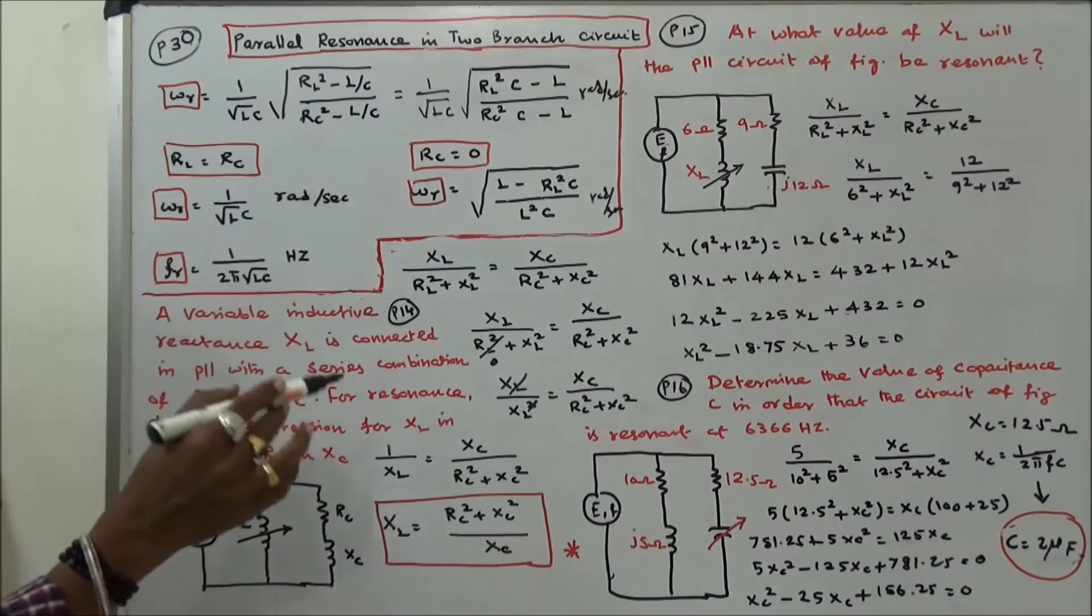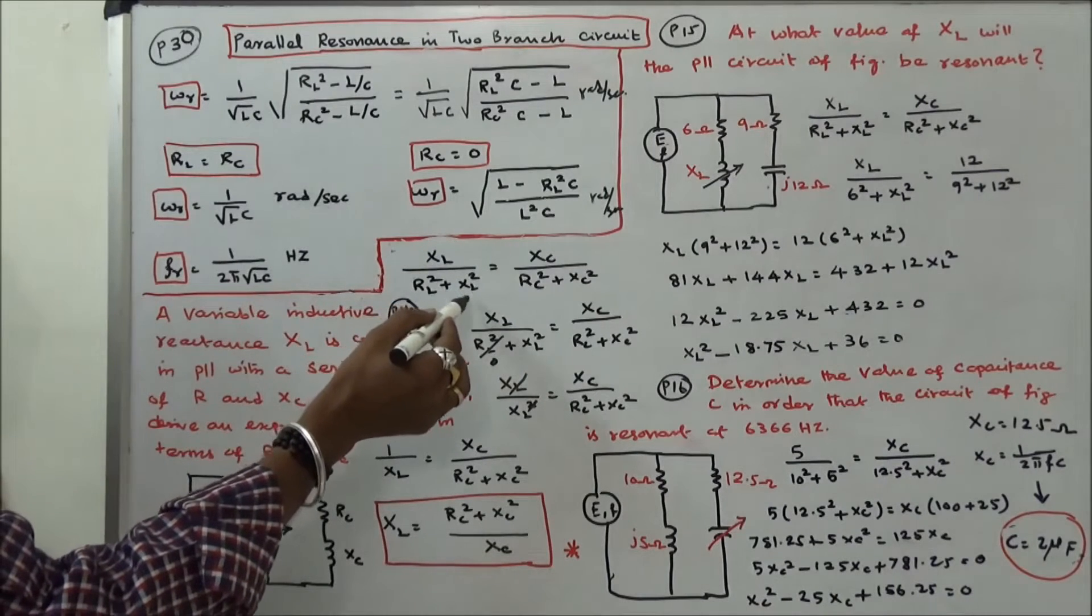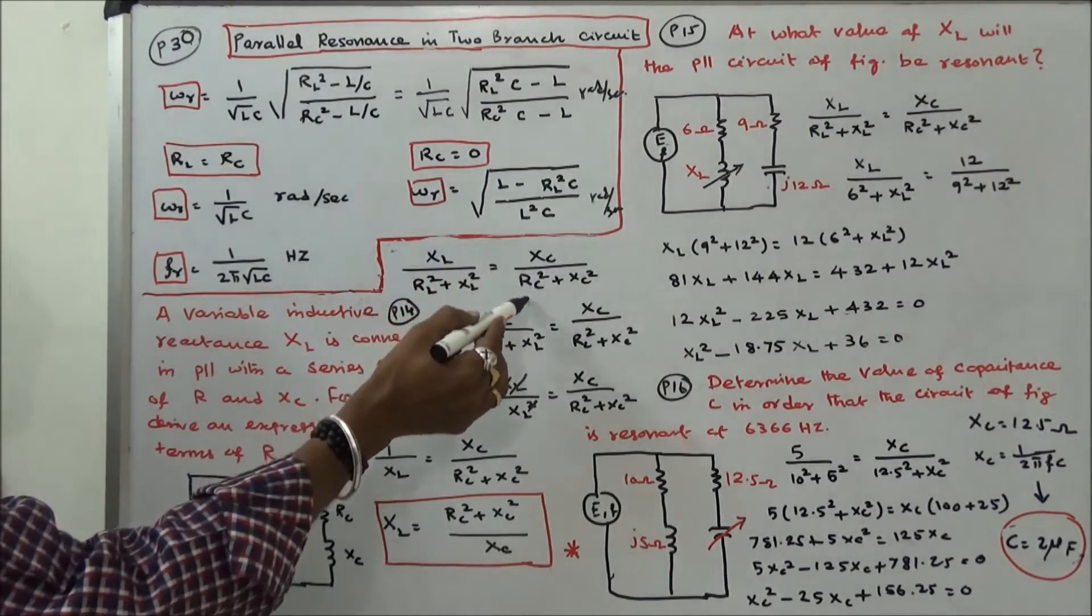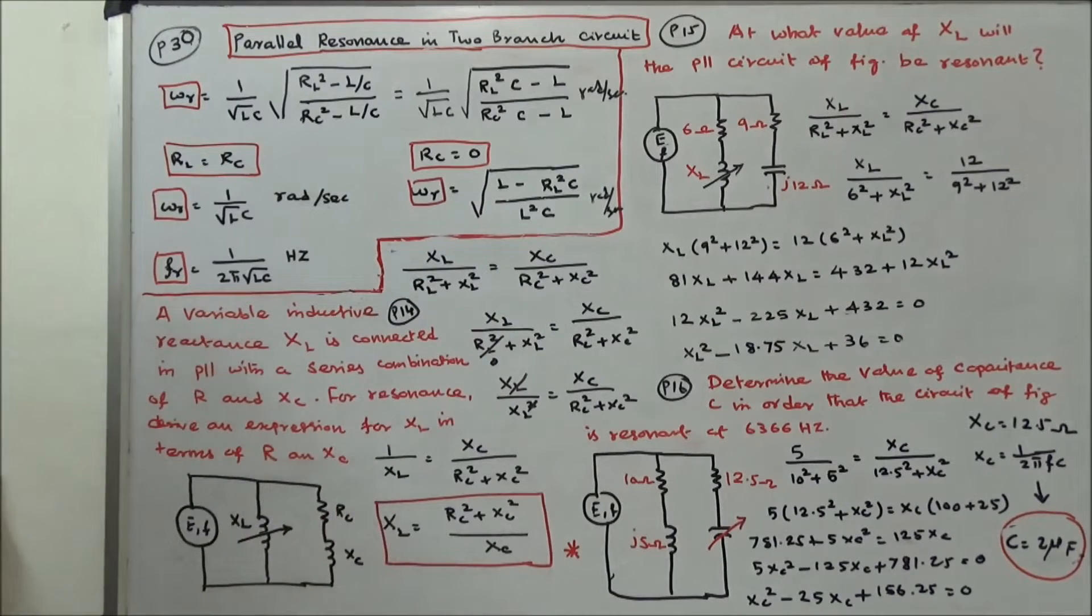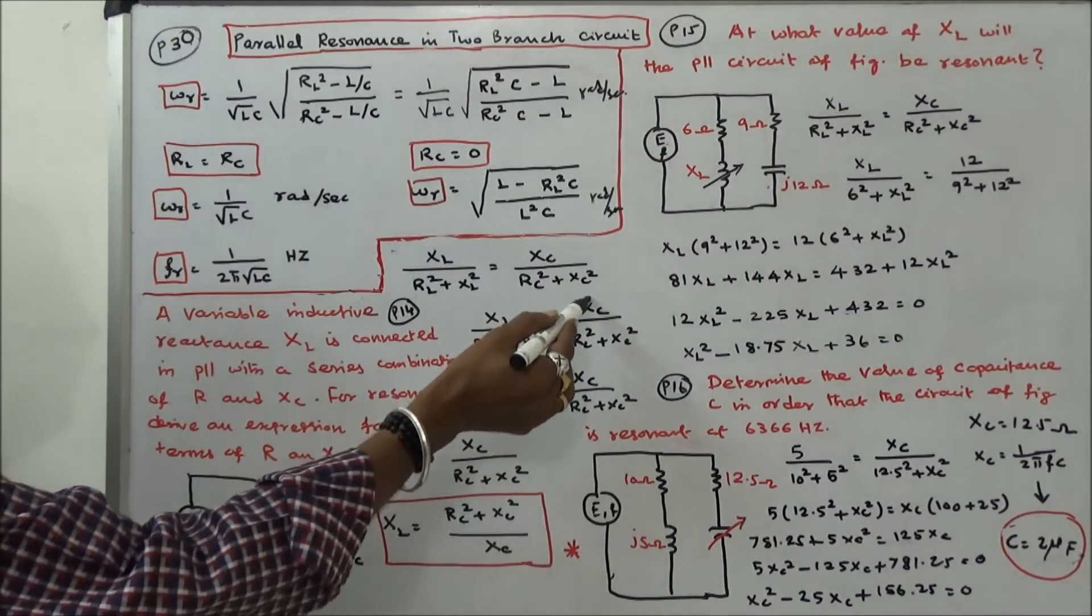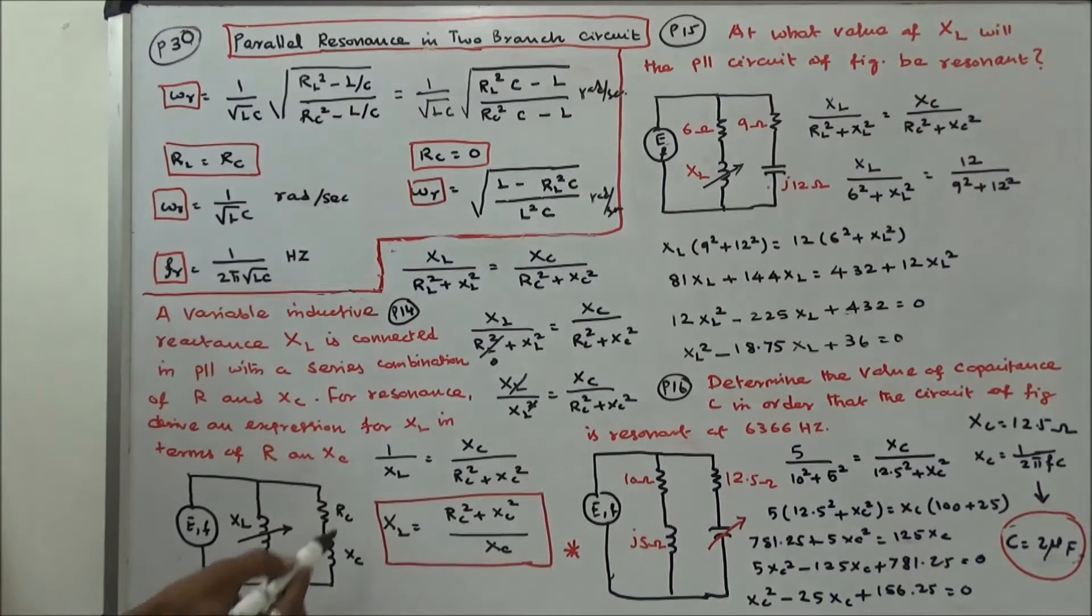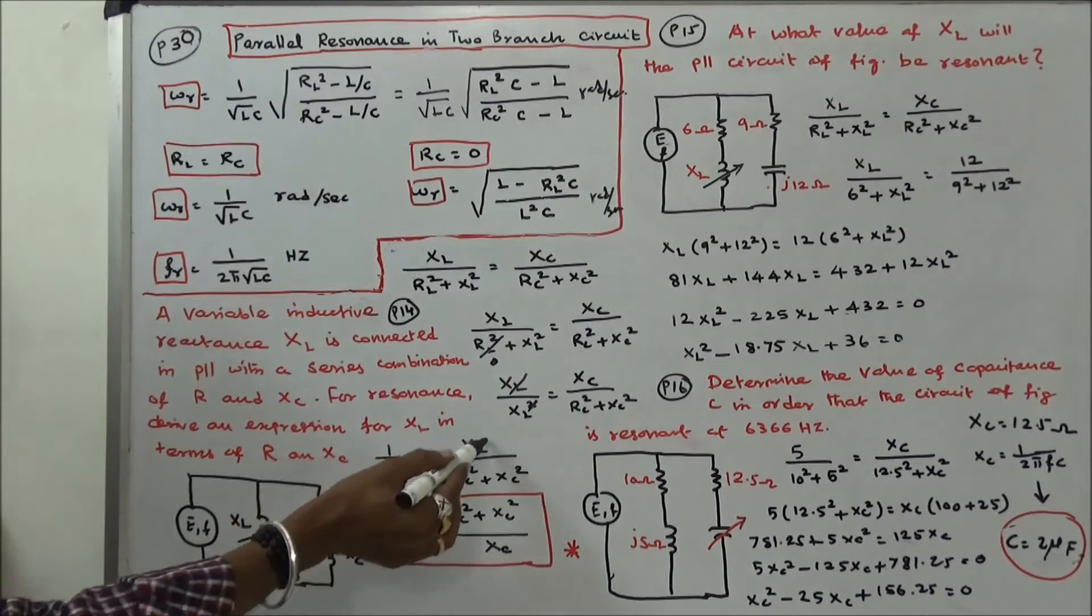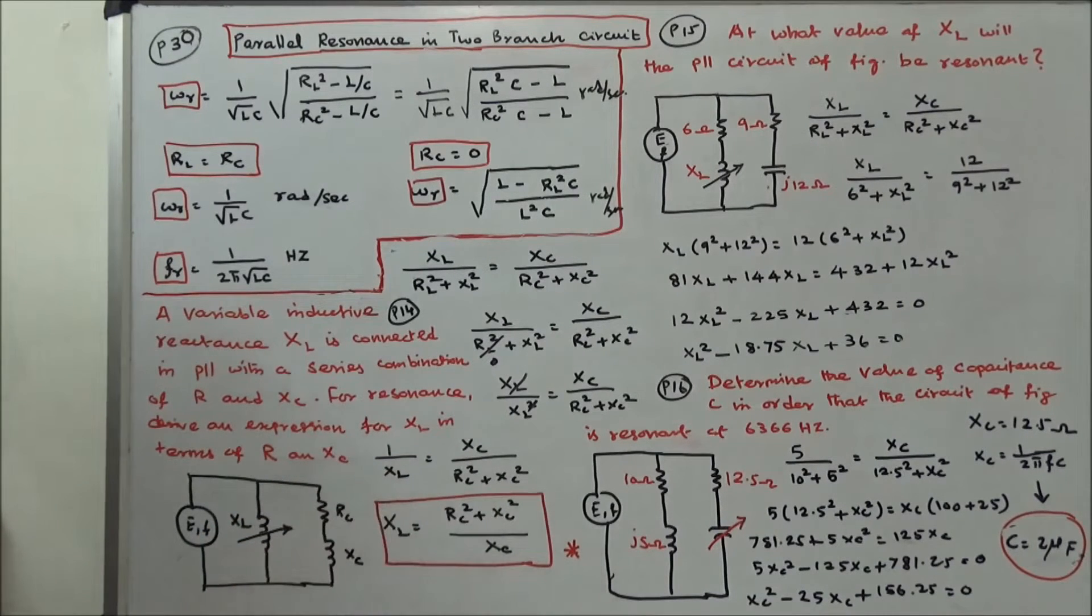For resonance, Xl by R squared plus Xl squared is equal to Xe by R squared plus Xe squared. Here R value is zero. Therefore, Xl by Xl squared is equal to Xe by R squared plus Xe squared. So that is equal to 1 by Xl is equal to Xe by R squared plus Xe squared. Xl is equal to R squared plus Xe squared divided by Xe.